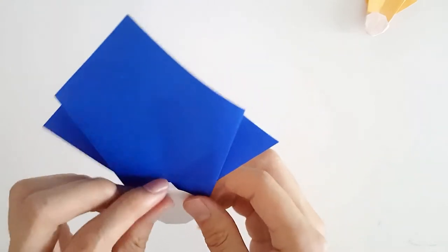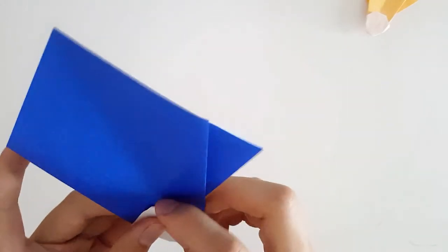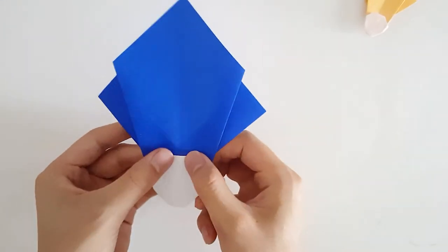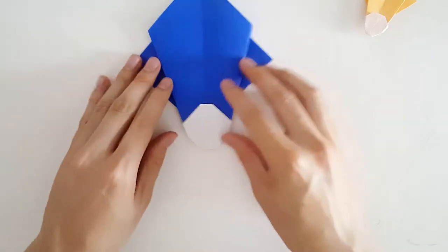We're just going to do a small tiny triangle fold, just tuck it in. And there we have it, we've made ourselves a shuttlecock.